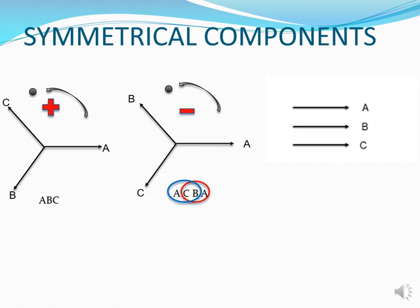For the negative phase sequence, if you rotate the axis through that dot, it goes through as ACB. Looking at the phasor diagram, the blue circle has ACB in it whereas the red circle has CBA. If A were at 90 degrees instead of zero, the first point through the dot would be C, followed by B, then A. So the negative phase sequence can be called ACB or CBA sequence — you must know all three names.